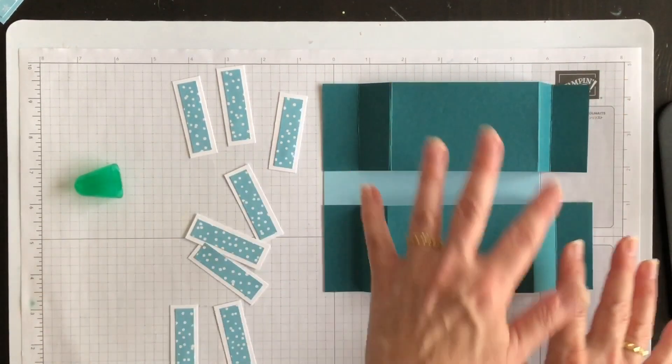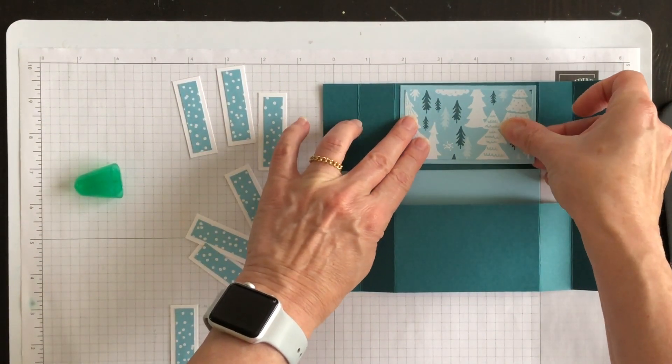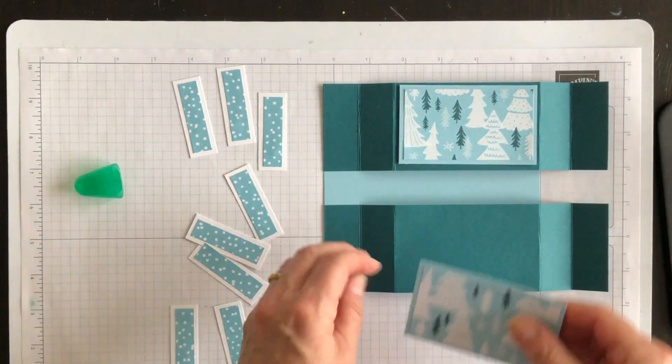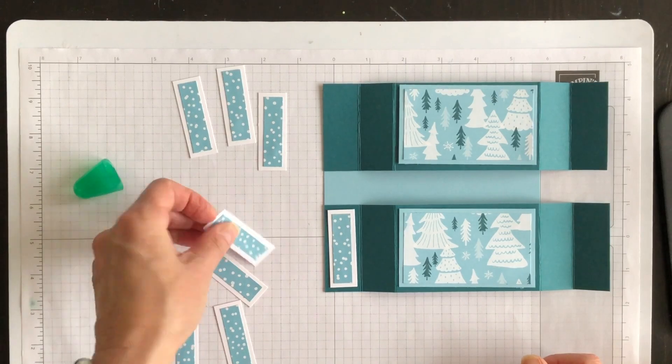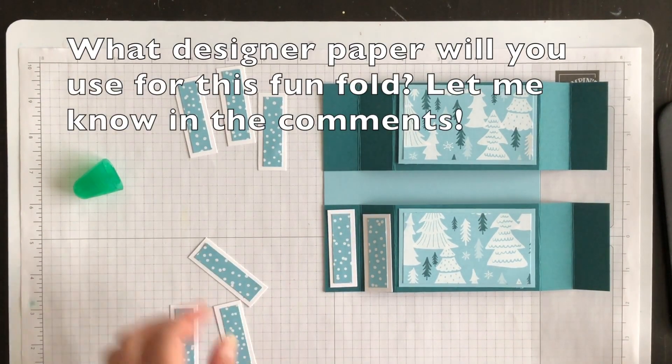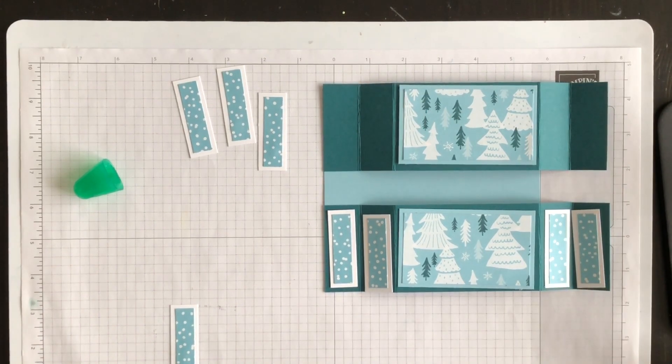So now what we want to do is take all of these panel pieces that we've created and we want to adhere them onto these fun folds before we attach this other side. It's much easier to do it now while we can lay it flat. So what I'm going to do is adhere these larger panels to the center and then these smaller panels to the side pieces. So I'll go ahead and I'll adhere these down using my multi-purpose liquid glue. I'll be back in a moment.